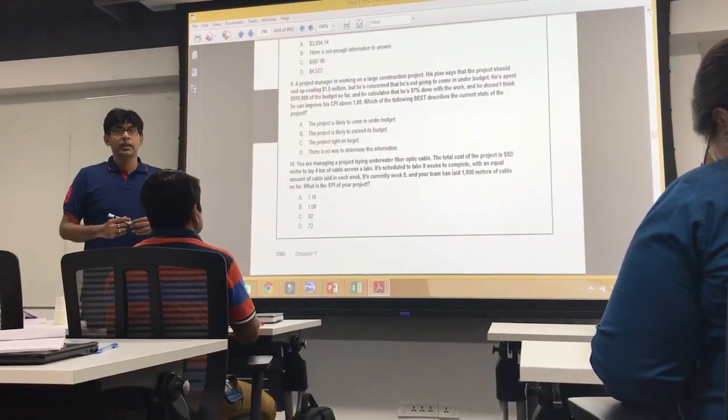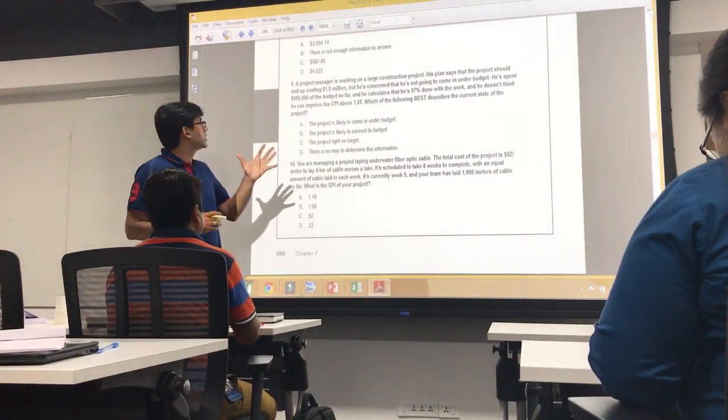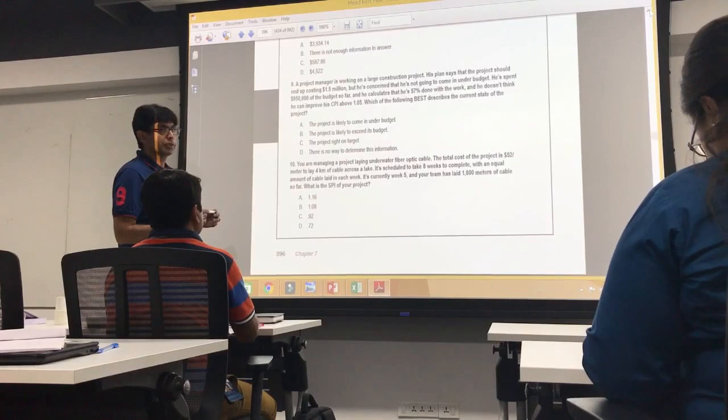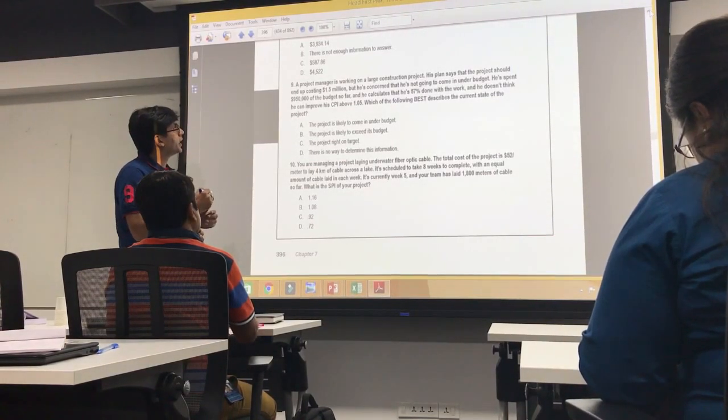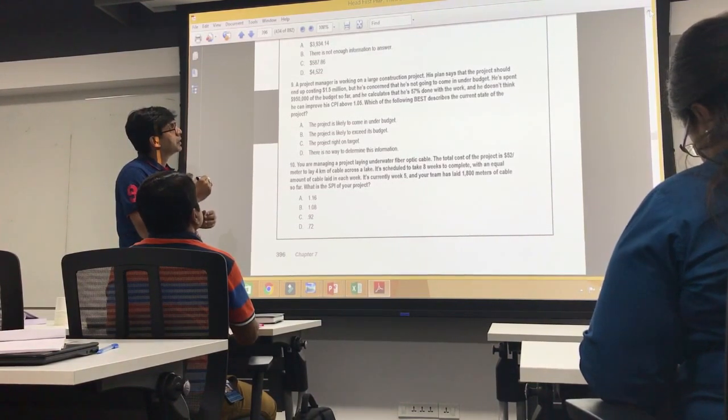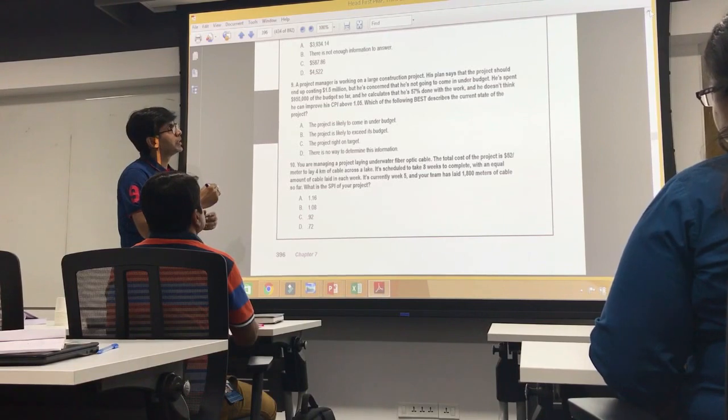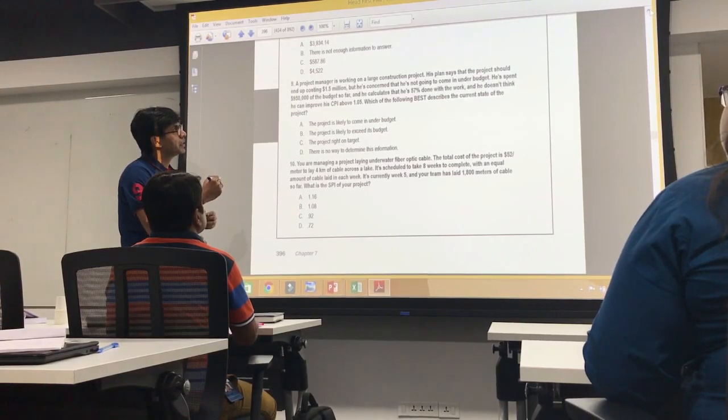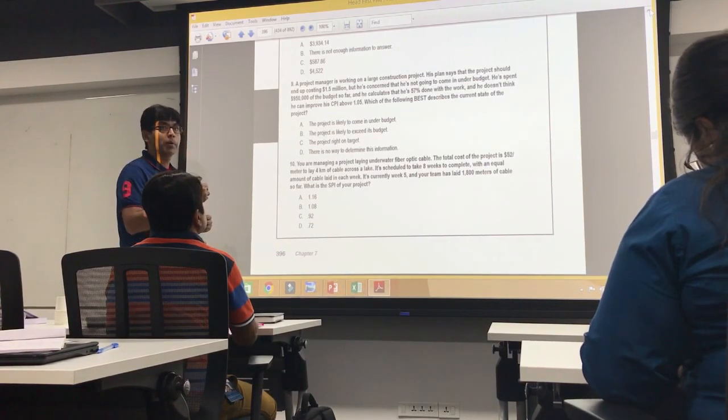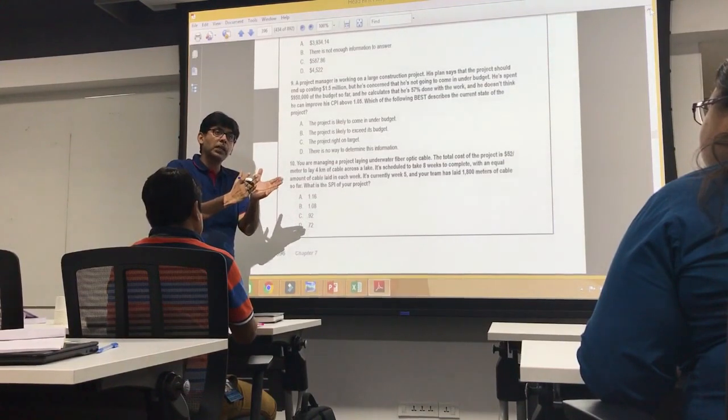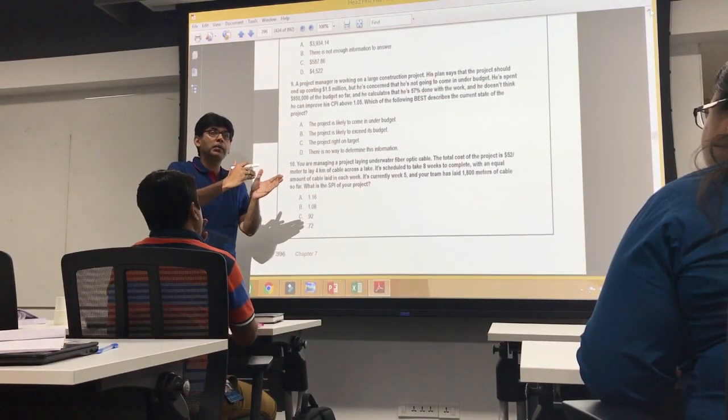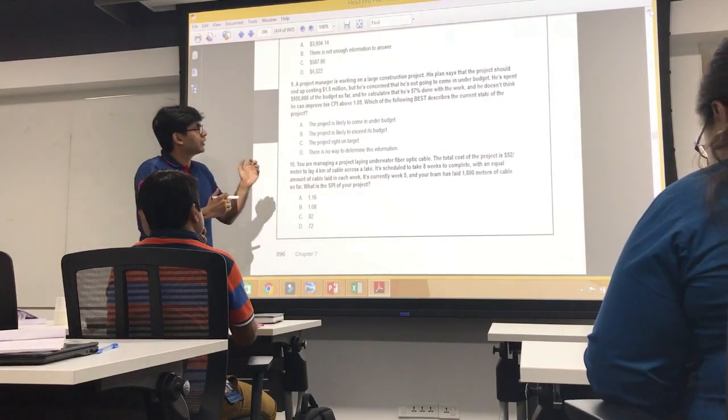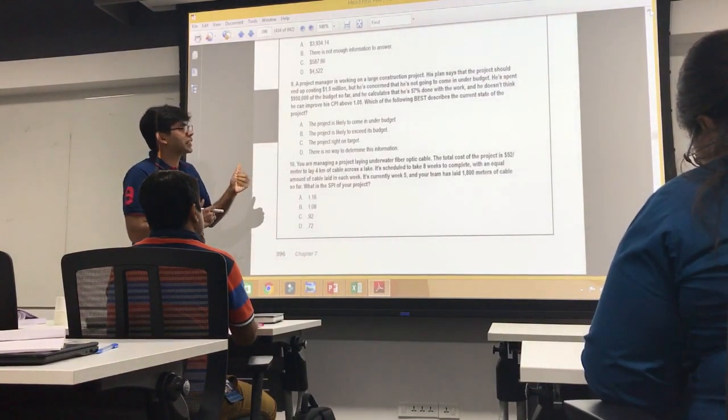Now, let's do a question on TCPI. Let's do a question on 9. Question 9 is like this. A project manager is working on a large construction project. His plan says that the project should end up costing 1.5 million USD. But he is concerned that he is not going to be under budget. He has spent 950,000 of the budget so far. And he calculates that he is 57% done with the work. And he doesn't think he can improve his CPI above 1.05. So, his current CPI may be whatever. But maximum improvement can be done till 1.05. Which means, TCPI can be maximum improved till 1.05. Now, the question says, which of the following best describes the current state of the project?